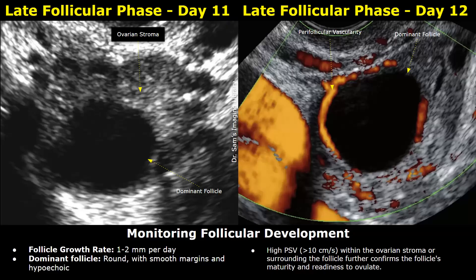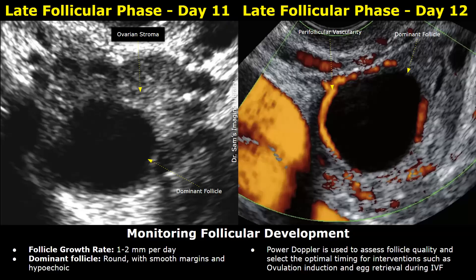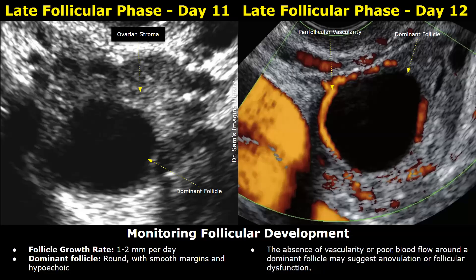Power Doppler can be used to assess follicle quality and select the appropriate timing for interventions such as ovulation induction and egg retrieval during IVF. The absence of this vascularity may suggest anovulation or follicular dysfunction.